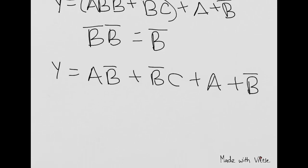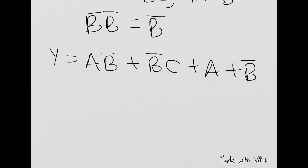Now what might I want to do next? I'm going to combine these two terms and factor an A out of them. So Y equals A, NOT B or 1, or NOT B, C, or NOT B.